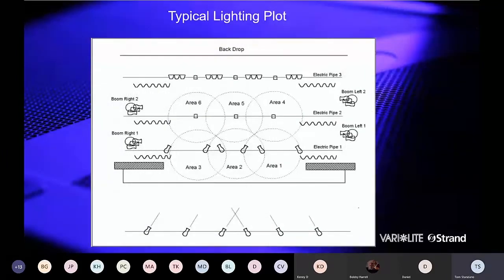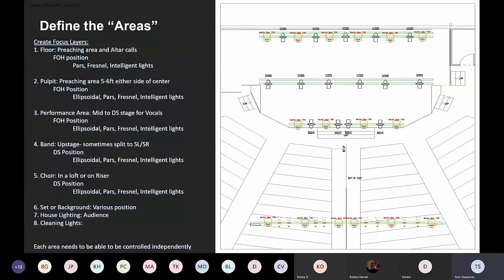Looking at a traditional light plot, you've got a position out front with lights crossing in, a proscenium, areas marked off, three different electrics, some side positions, and a third position usually lighting the backdrop. I take this as my theatrical base and then put it into worship terminologies. I define the areas because they're a little different than a traditional theater setup, so I'm looking to create different focus layers. Because I'm a control freak, I want to control each of those different layers independently.